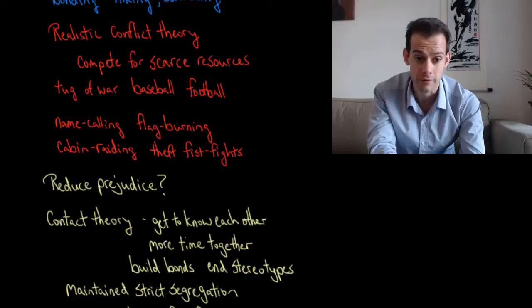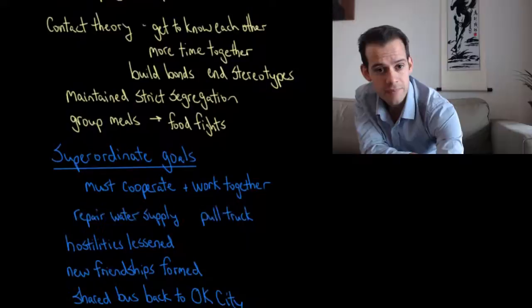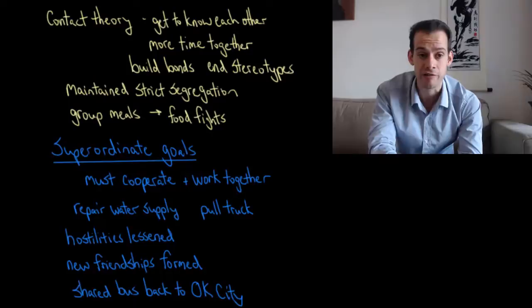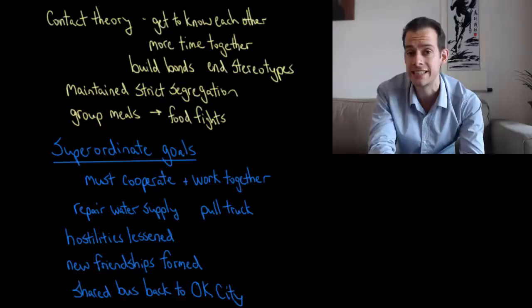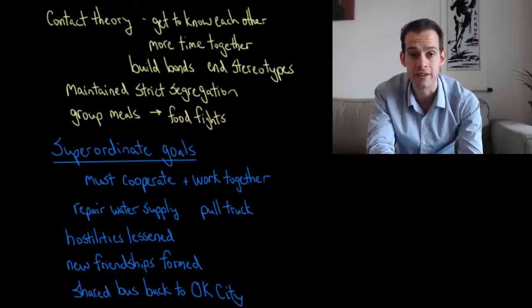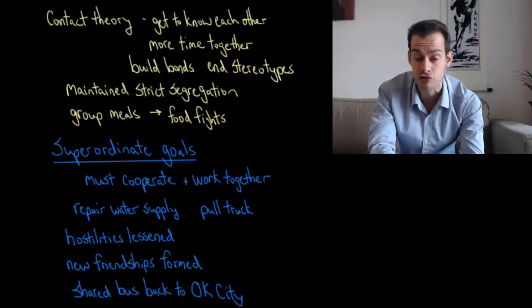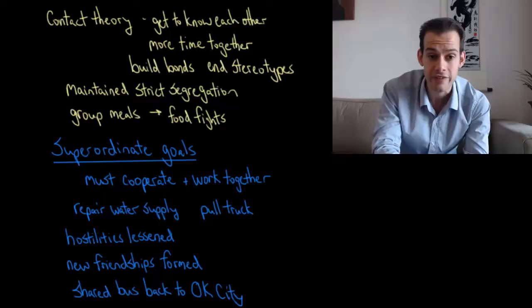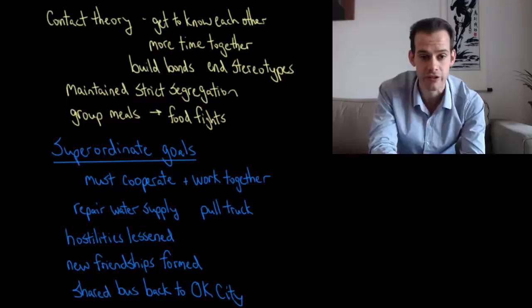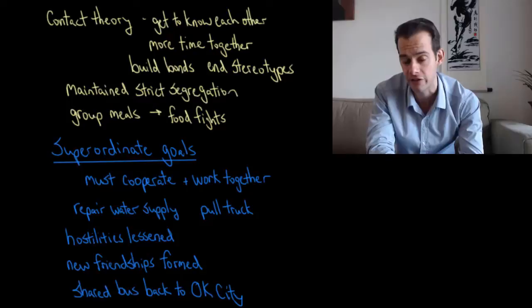The question then was how to reduce this prejudice and get the groups to get along. One theory at the time was that groups in conflict simply needed to get to know each other better — to spend more time together, have greater contact — and that this would naturally reduce prejudice and discrimination. The idea was they would build bonds across group lines and end stereotypes by seeing members of the other group as individuals. But this contact theory wasn't enough: when the Eagles and Rattlers were put together, they maintained strict segregation, only socializing within their own group. Group meals often ended in food fights. Contact alone did not reduce the prejudice.